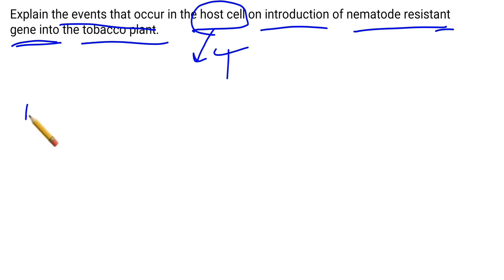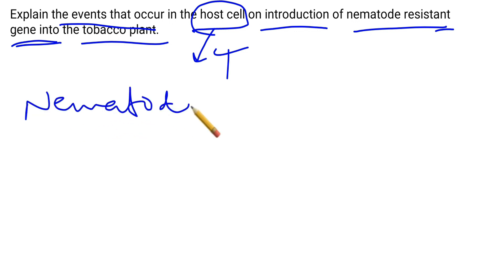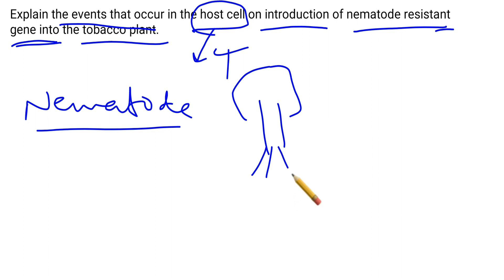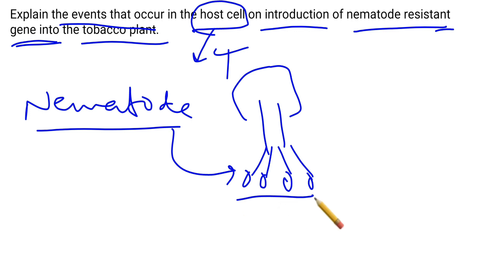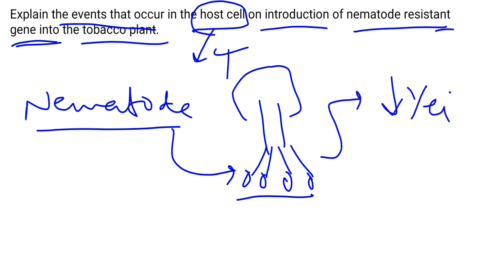Nematodes are basically acoelomate worms which cause infection to this tobacco plant. The infection occurs in the roots — this nematode causes infection in the roots and forms nodes. This is also known as root node formation disease, which results in a decrease in the yield of this tobacco plant.